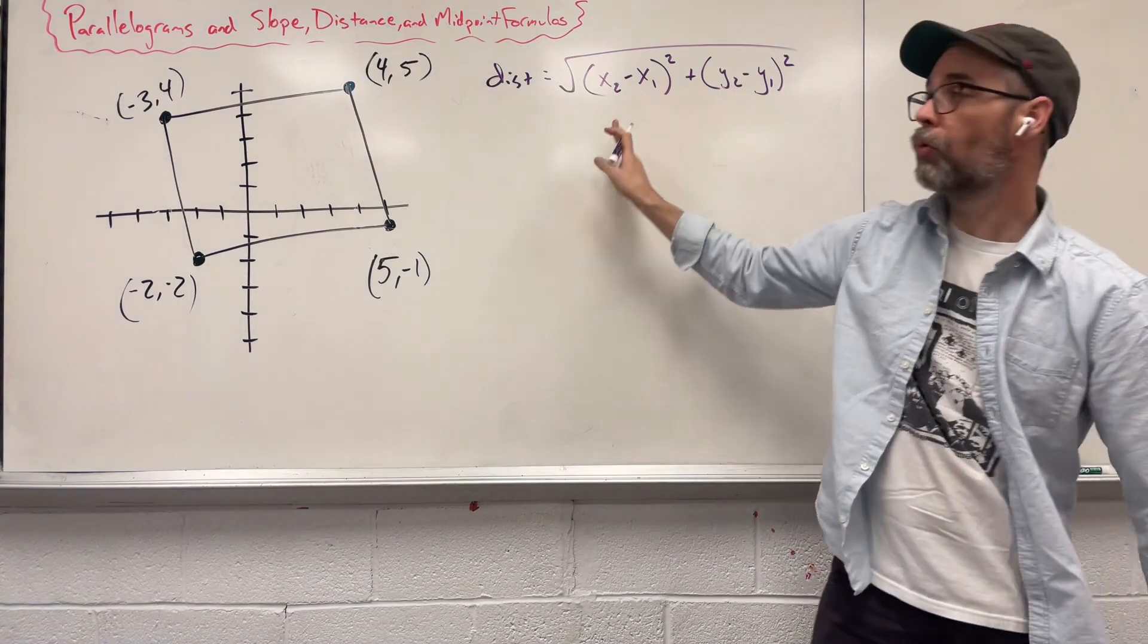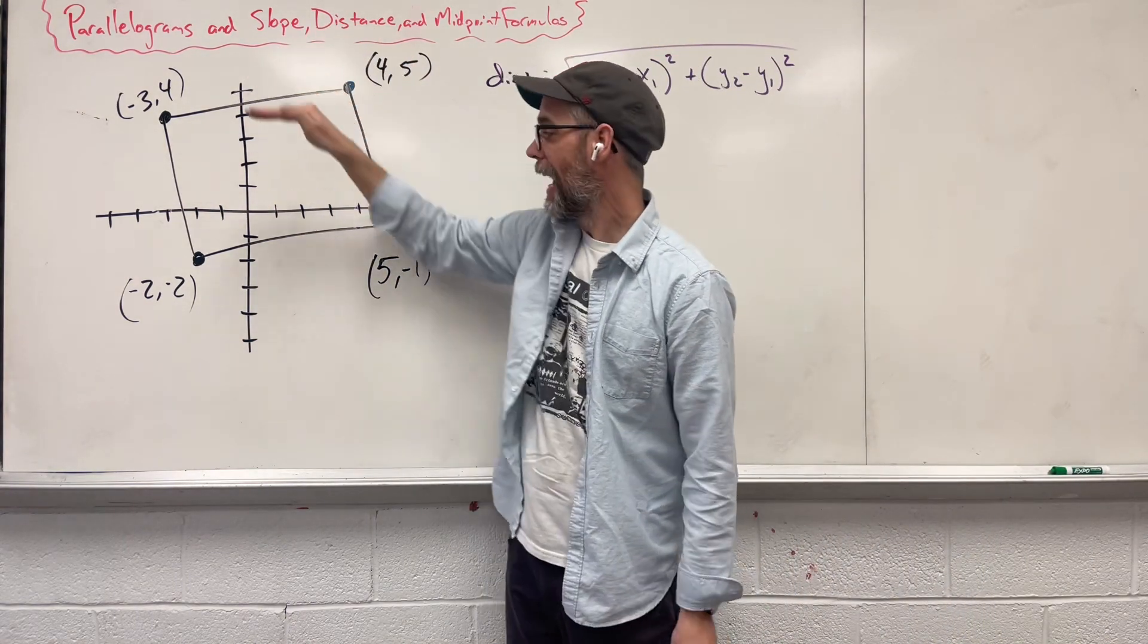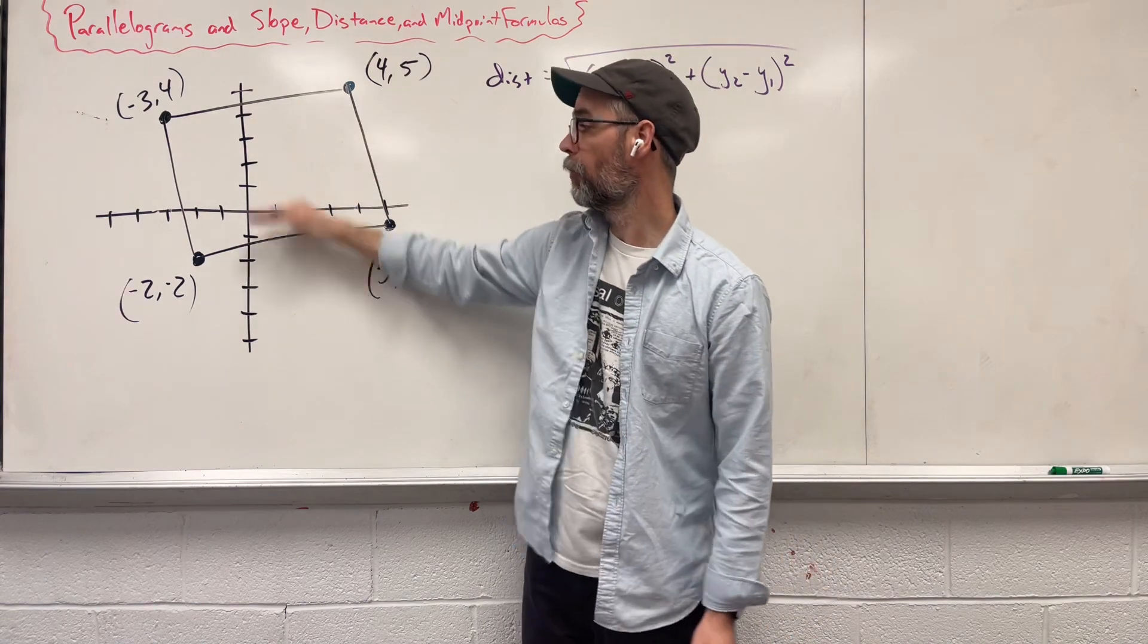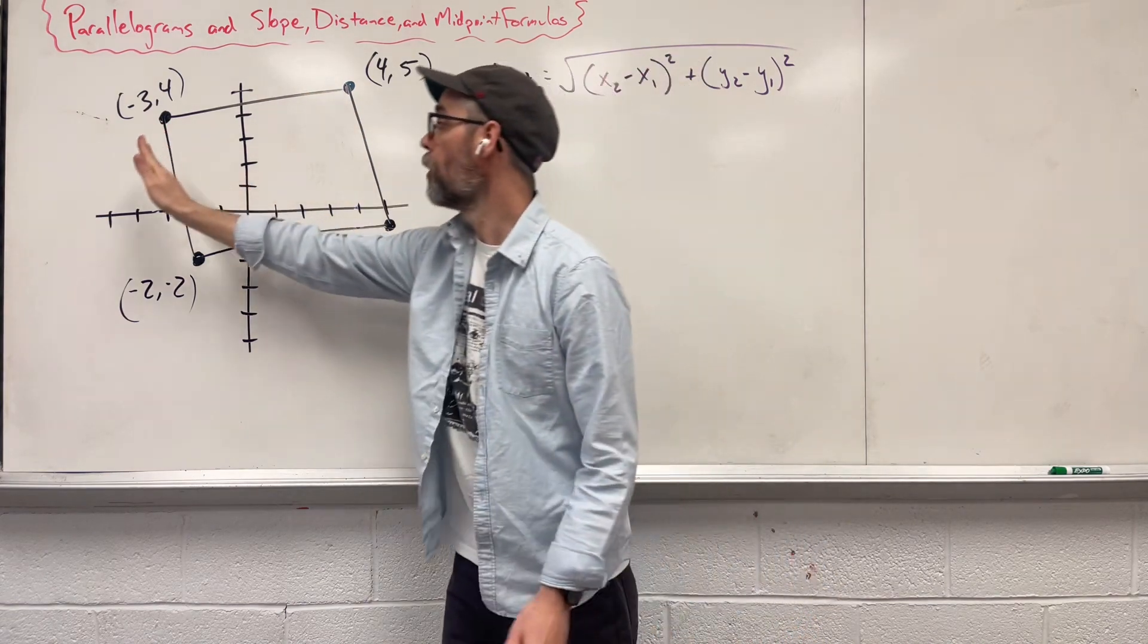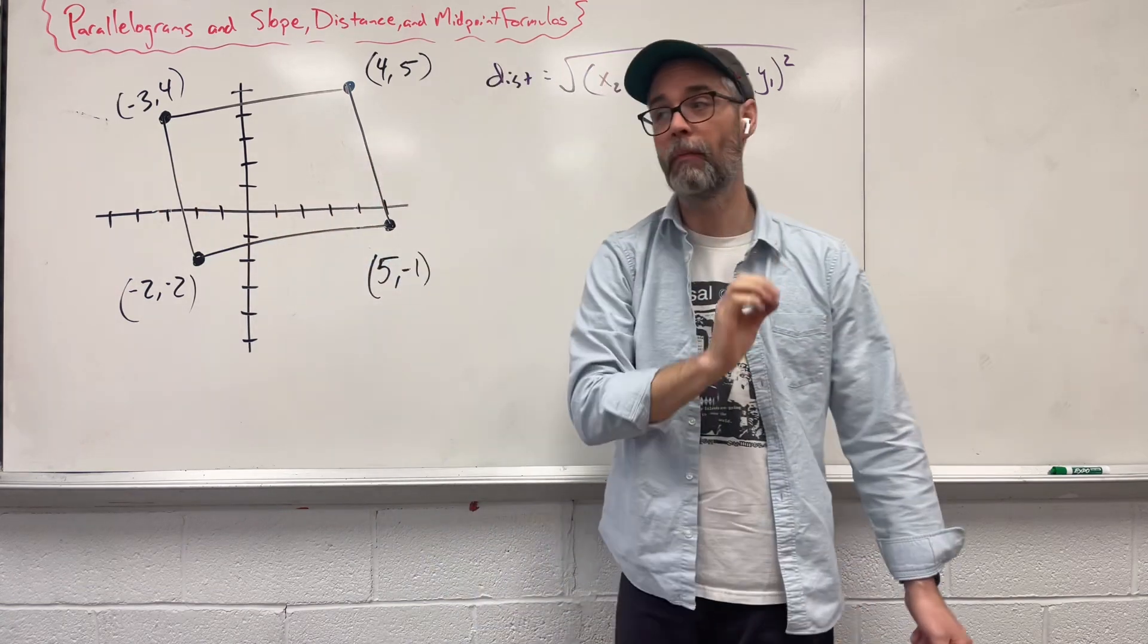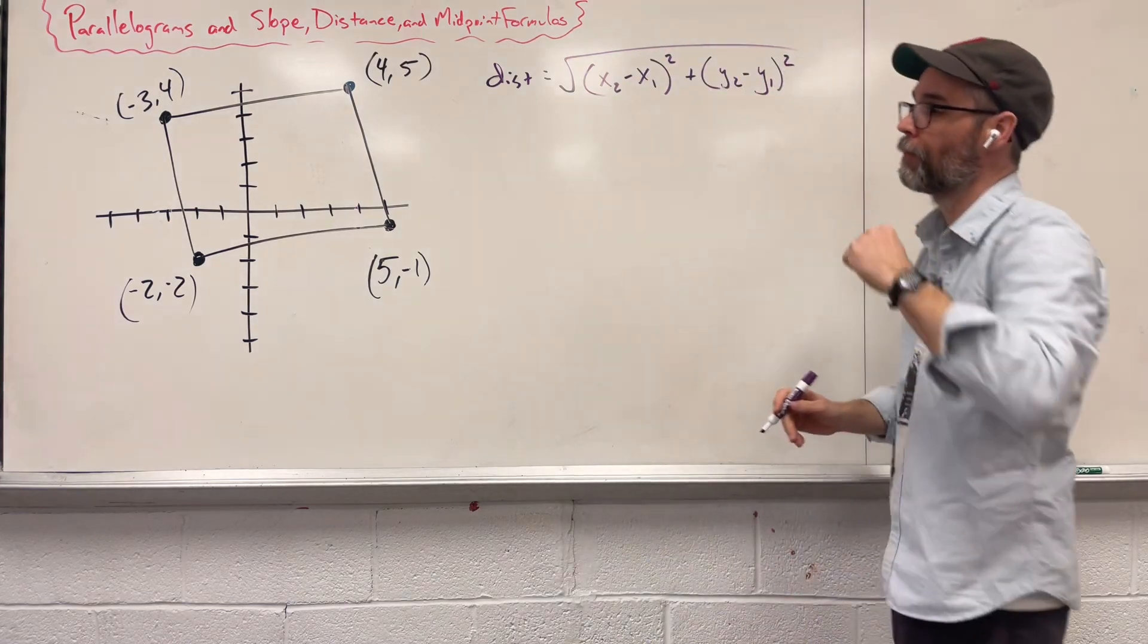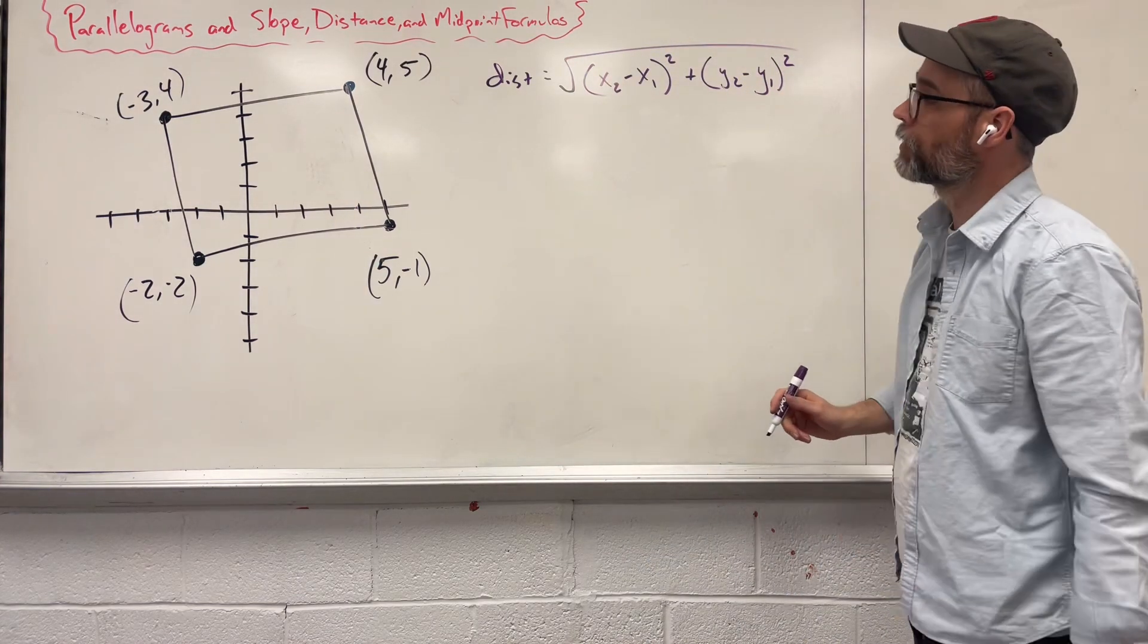We need to do this to all four sides. So when we find the distance up here and the distance down here, if these are both the same number, awesome. But when we do it to the sides over here, if they are the same as well, having both pairs of opposite sides congruent to each other, you in fact have a parallelogram.